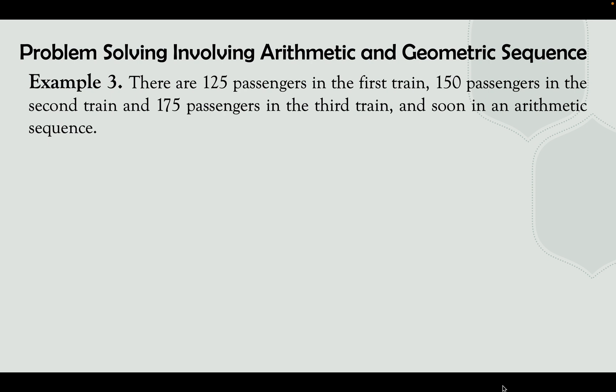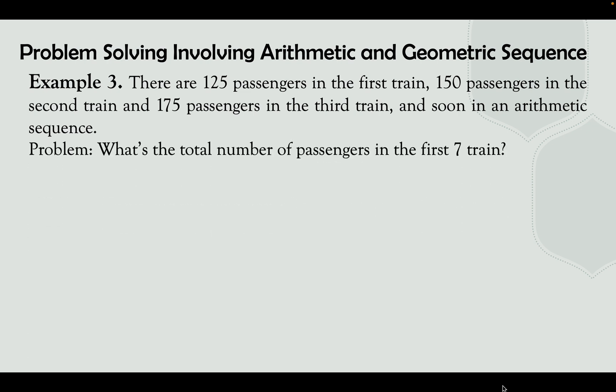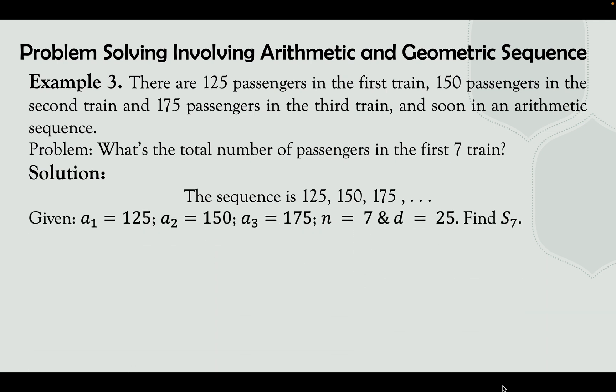Example number 3: There are 125 passengers in the first train, 150 in the second train, and 175 in the third train, and so on, in an arithmetic sequence. What is the total number of passengers in the first seven trains? Our given values are: a sub 1 equals 125, a sub 2 equals 150, a sub 3 equals 175, n equals 7, and the common difference is 25, since 175 minus 150 equals 25.